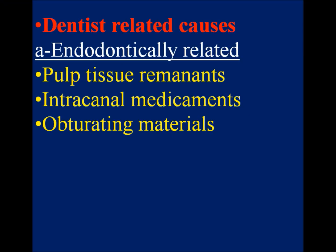Dentist-related causes. Endodontically related. Pulp tissue remnants: if some pulp tissue remains in the pulp chamber, especially the pulp horn, discoloration occurs due to tissue and blood decomposition. Intracanal medicaments: phenolic or iodophor-based medicaments may discolor dentine. Obturation material: after obturation, sealer and gutta-percha have to be removed from the pulp chamber to prevent tooth discoloration.